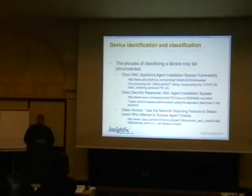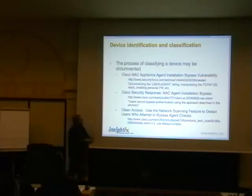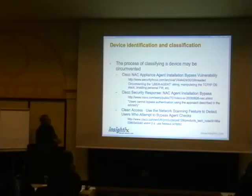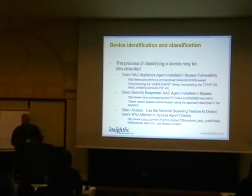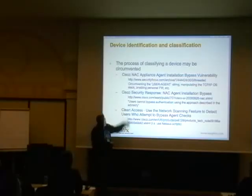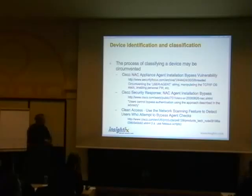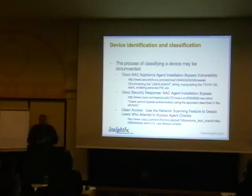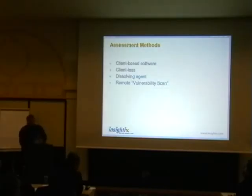Like anything in life, not everything is created equal. This is an example from the Cisco NAC appliance agent. The way the agent used its ability to sniff traffic was to look at the user agent string. If it didn't reveal that this element was Windows, it basically let the device go. We all know that is absolutely a no-no. There was a patch for this. Cisco also said you can use another feature called NAS scan to remotely scan the element and get its operating system — wait two slides and see why that's not going to work. The assessment methods themselves are: client-based, client-less, dissolving agent, and remote vulnerability scans.